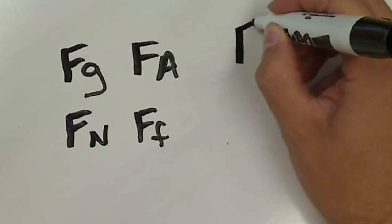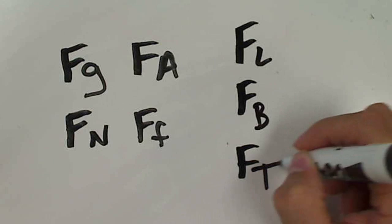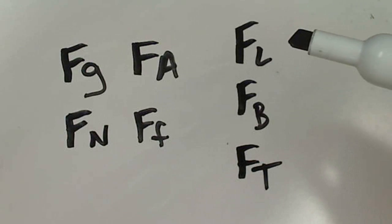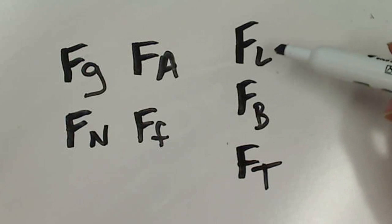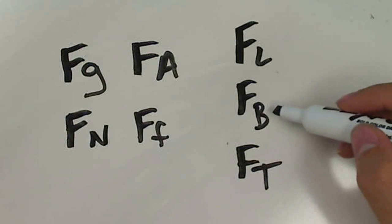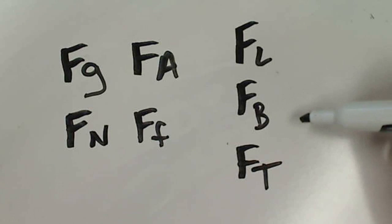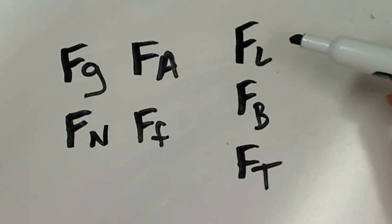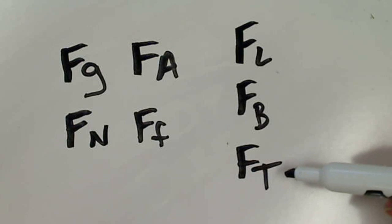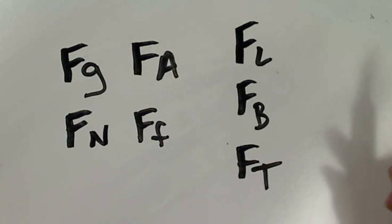Now we have three other forces that also come up — they're a little more specialized. Lift happens in airplanes, helicopters, and wings because of Bernoulli's principle. Buoyancy is how things float due to different densities — the smallest density rises, the highest density sinks. T is for tension, which acts along a narrow strip like wire, cable, rope, or chain that's being stretched.